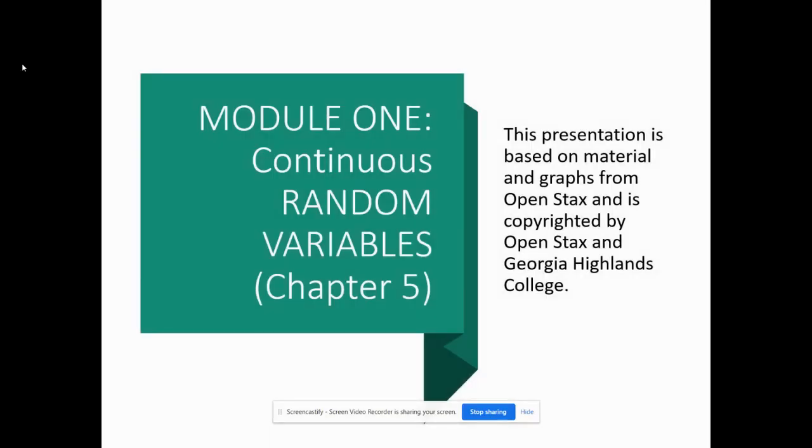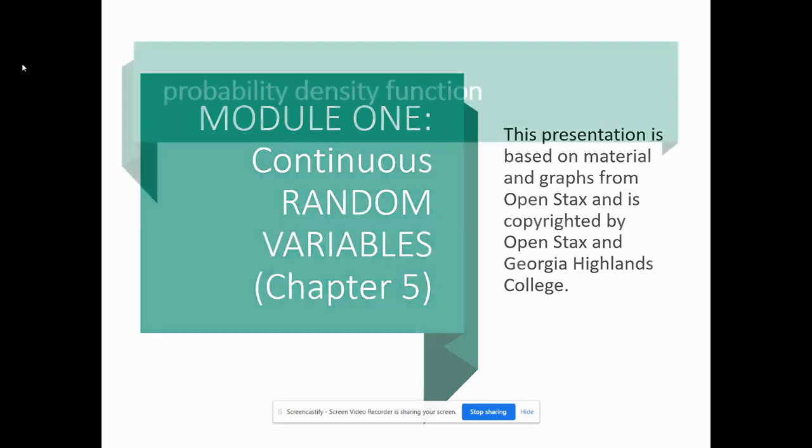We're going to talk about continuous random variables, which is a lot like what we did in the last section, but now we don't have to use only counting numbers. We can use numbers with decimals and fractions and any kind of thing like that.